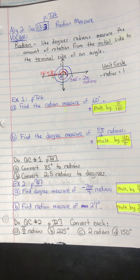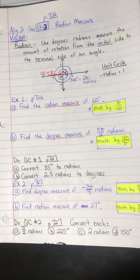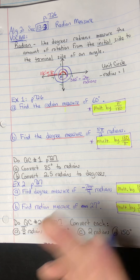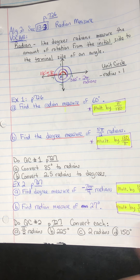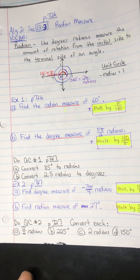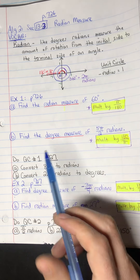Angles can be measured in degrees, and we're used to measuring angles in degrees, but now we're going to learn something where you can actually measure angles in radian measures. So instead of degrees, you can use radians or degrees. A lot of these trigonometric functions use radian measures or degrees or both. So we have to learn how to use radians and degrees, convert between them, and see how that looks on the unit circle.